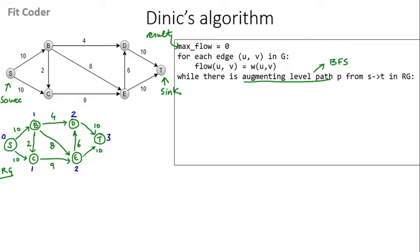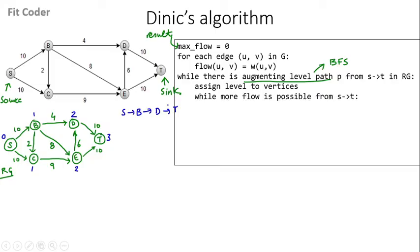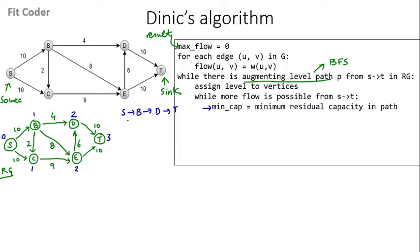The while condition says: while there is an augmenting level path from S to T. We can see a path from S to B to D to T, so this condition is true and we enter the while loop. We assign levels to vertices. The next step is: while more flow is possible from S to T. In this inner while loop, we find the minimum residual capacity in the path. From S to B the residual capacity is 10, from B to D it is 4, and from D to T it is 10. So the minimum residual capacity is 4.